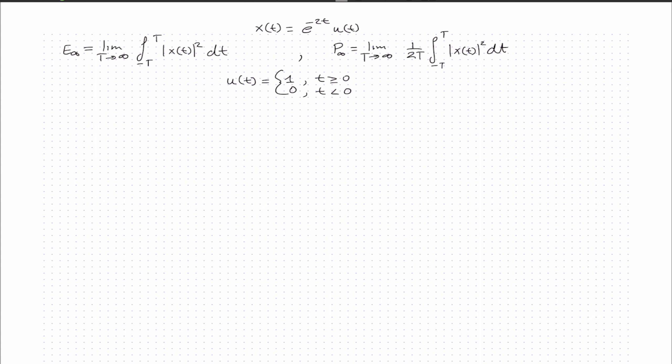We approach the problem by taking the absolute value of x(t) squared. The absolute value of e^(-2t) is still e^(-2t). Squaring that, we get e^(-4t). That's the first part of the problem.